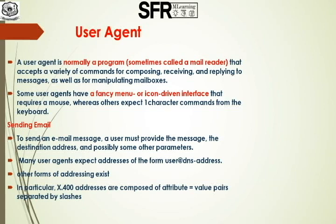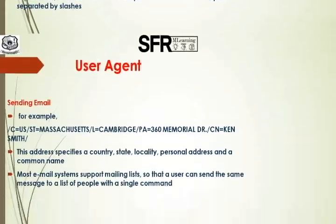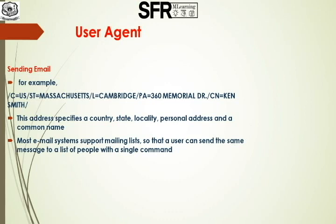In particular, X.400 addresses are composed of attribute=value pairs separated by slashes. This address specifies the country, state, locality, address, and a colony. This is also one of the address formats of email.